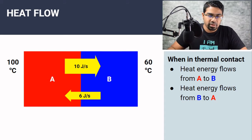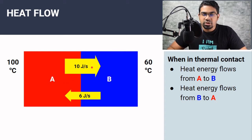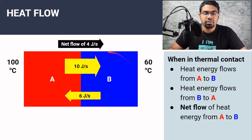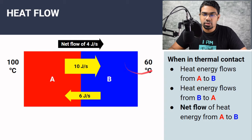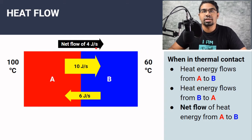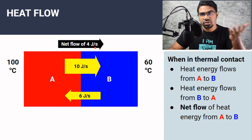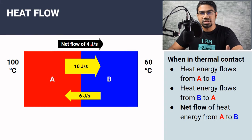So looking at net flow of heat: A to B is 10 joules per second, B to A is 6 joules per second, so there will be a net flow of heat of 4 joules per second from A to B — from the hotter object to the colder object. This is why we normally say heat flows from a hot region to a colder region: it is actually the net flow of heat.